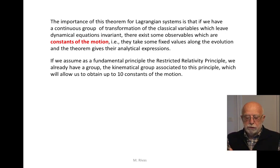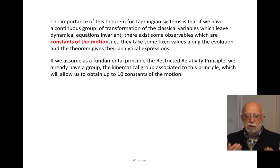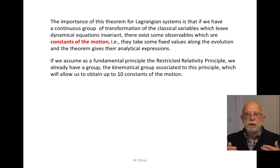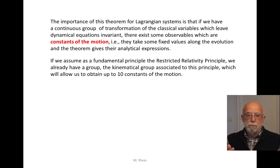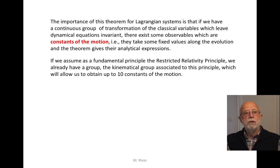If we assume a restricted relativity principle, we have a complete group of symmetries because the kinematical group associated to the class of inertial observers — this group leaves dynamical equations invariant. Therefore, associated to every one-parameter group of this general group, there will be one constant of the motion.